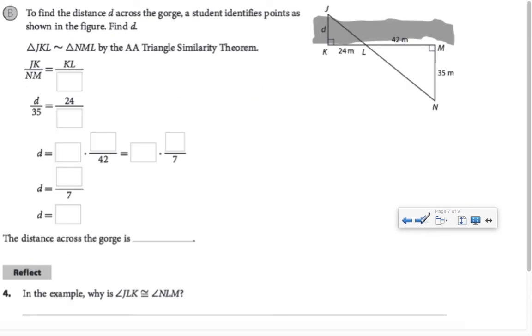Let's do that here. We know that triangle JKL is similar to triangle NML by angle-angle triangle similarity. So I know that JK is to NM as KL is to ML. Substitute in the lengths that I know. So D is to 35 as 24 is to 42.